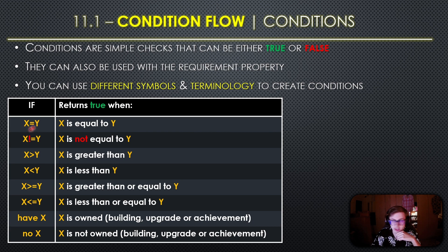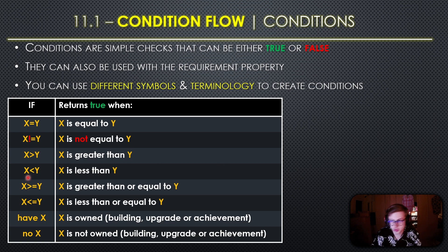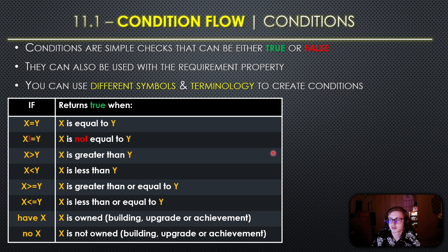You can use symbols such as the equal sign, which returns true when two variables are equal to each other. You can also use exclamation mark equals, which is the opposite - it returns true when the variables are not equal. Next up you have classic comparison symbols such as greater than or less than, and you can also use greater than or equal to and less than or equal to to compare two values more precisely.